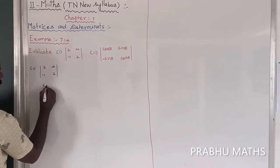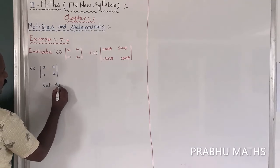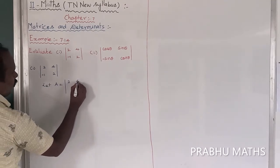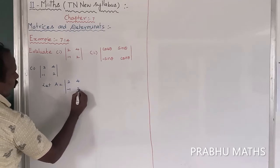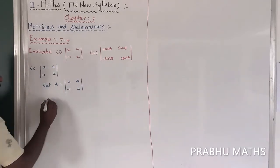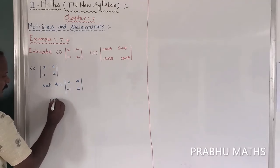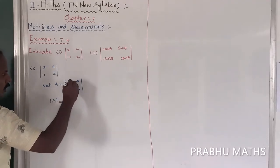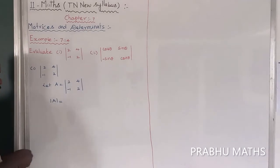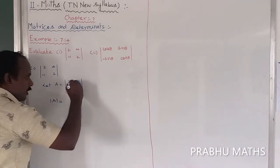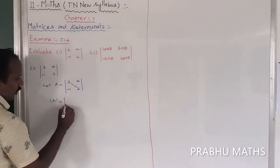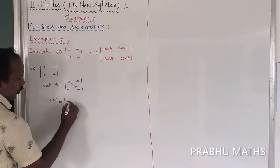Let us consider this as value A. So A equals the determinant of [2, 4; -1, 2]. To find the determinant value: the determinant means the modulus of A. That is equal to the first diagonal multiplication, which is the plus term. So 2 times 2 equals 4.